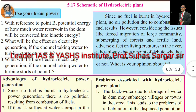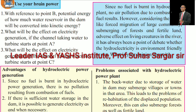Use your brain: With reference to point B in the diagram, how much potential energy of the water reservoir in the dam will be converted into kinetic energy? Since no fuel is burned in a hydroelectric plant, there is no air pollution due to combustion of fuel. However, considering issues like forced migration of large communities, submerging of forest and fertile land, and adverse effects on living creatures in the river, it has always been a point of debate whether hydroelectricity is eco-friendly or not.